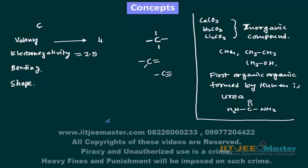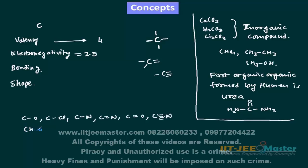In organic chemistry we see C-O bonds, C-Cl bonds, C-N bonds, C=N double bonds, C=O double bonds, C≡N triple bonds, and also C-H bonds. If you know the electronegativities of carbon, chlorine, oxygen, nitrogen, and hydrogen, then we can tell what kind of bond it will be, how it will react with other reactants, and what kind of reaction will proceed.